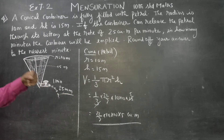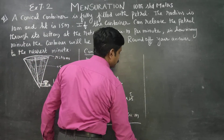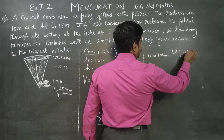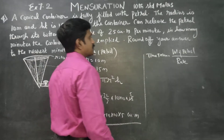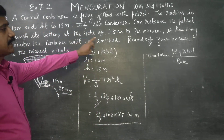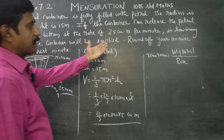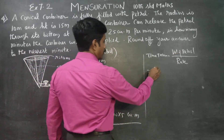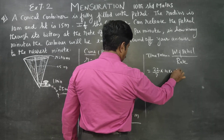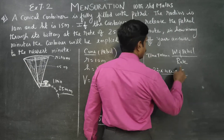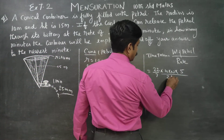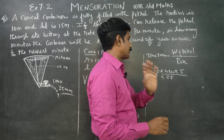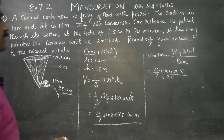Now, time = volume of petrol divided by rate. That is: (22/7) × 10 × 10 × 5, divided by the rate, which is 25. Taking the reciprocal, this becomes volume divided by rate.